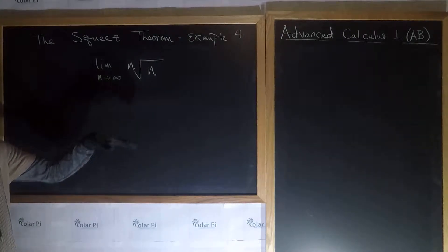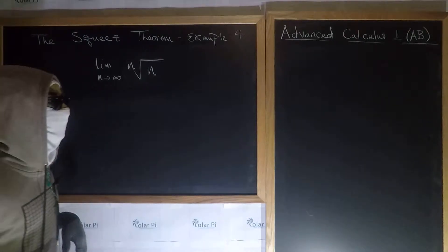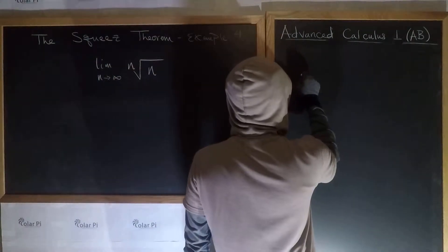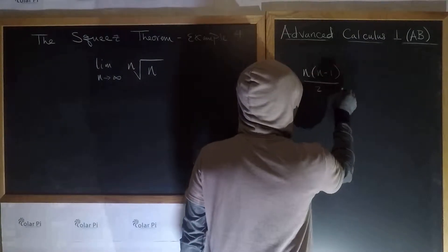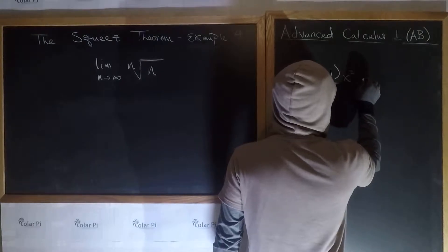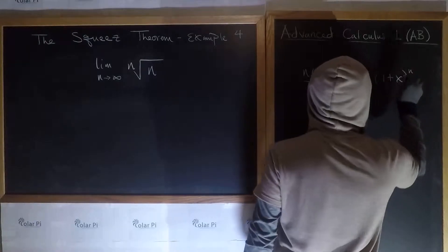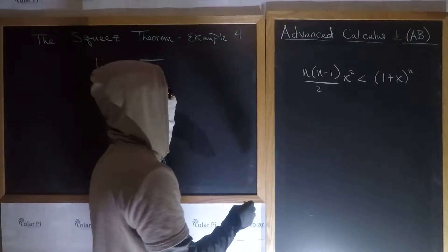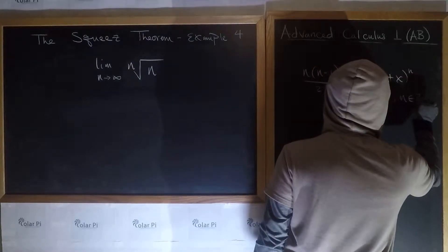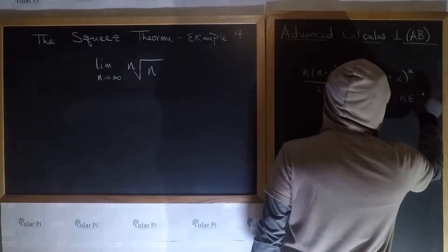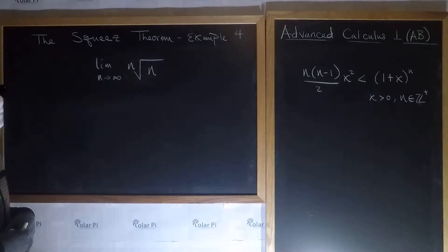Here, what we have to do is figure out what this limit is and show what it is. Now, to do that, let's first show that n times (n minus 1) divided by 2 times x squared is less than 1 plus x to the n. So why is that true, and how can we show that that's true?